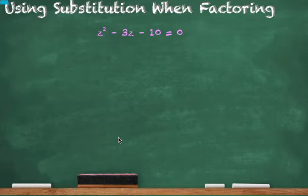So, let's work this out. The factors here, z minus 5 times z plus 2 is equal to 0. We have z is equal to 5, and z is equal to negative 2.